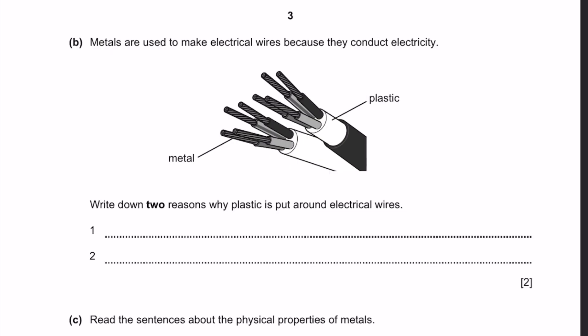Question B. Metals are used to make electrical wires because they conduct electricity. Write down two reasons why plastic is put around electrical wires. So we can see the metal of electric wires, and we can see labeled on the diagram that plastic is put around electric wires. So why is it put around electric wires? One thing we know is that metals can conduct electricity, which is there in the question. But we know that the human body can also conduct electricity.